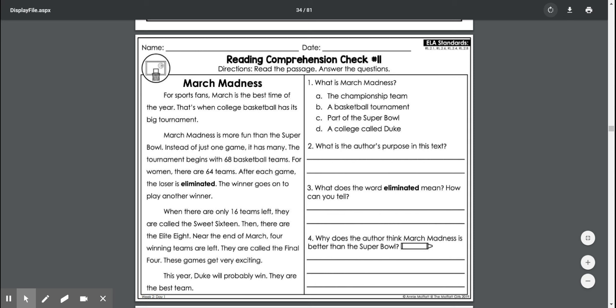The tournament begins with 68 basketball teams. Wow, that's a lot of basketball teams, boys and girls. That's kind of crazy. For women, there are 64 teams.